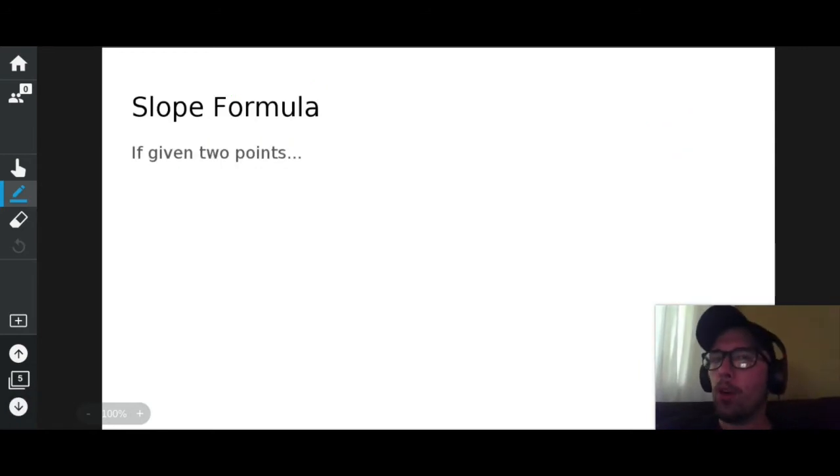What if I don't give you a graph though? Well, if I give you two points instead of a graph, what you're going to do is you're going to label each point. Call them x sub 1 subscript, y sub 1.